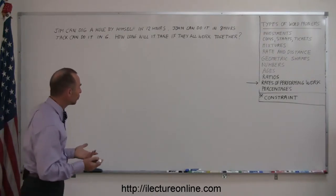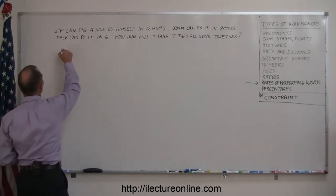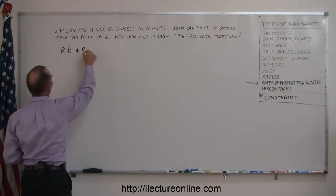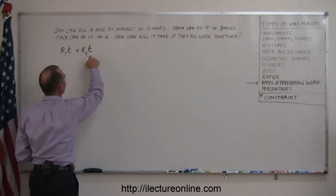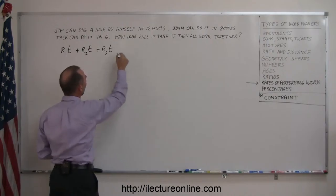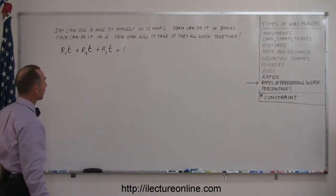Just like you would work if there's only two people doing the work, you say rate of the first person times the total time that it takes to do the job, plus the rate of the second person times the total time it takes to do the job, plus the rate of the third person times the total time it takes to do the job, adds up to doing the whole job. And that's what the one represents.